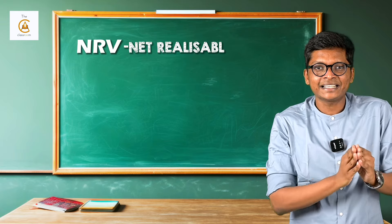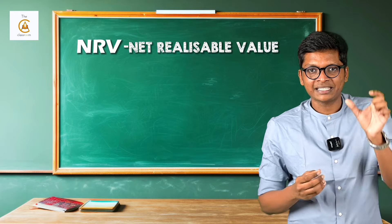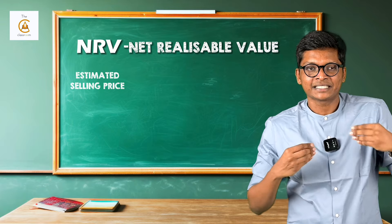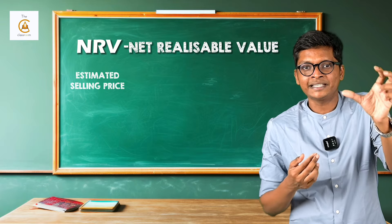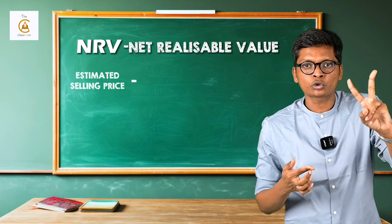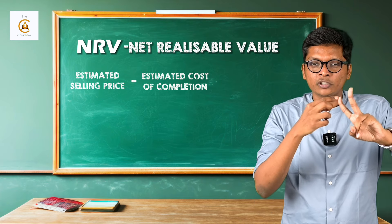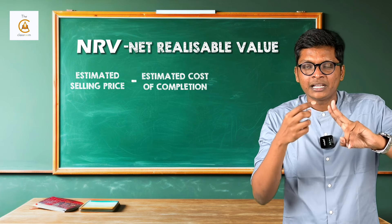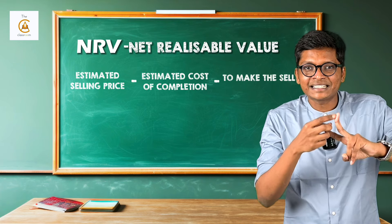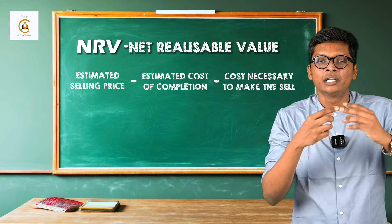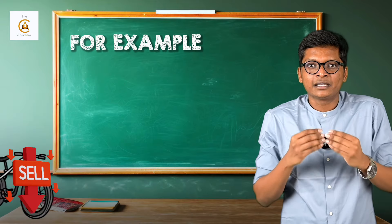Inventory is defined as a very simple term. It says inventory includes finished goods, work in progress, and raw material. How do you value inventory? Inventory is valued at lower of cost or NRV. So we need to understand what is cost and what is NRV.